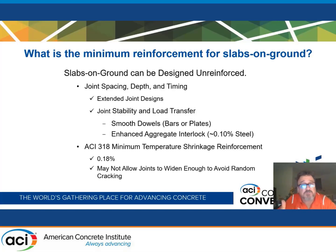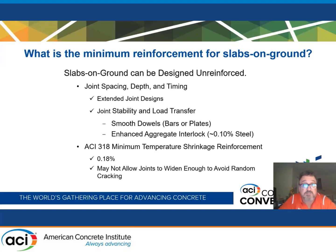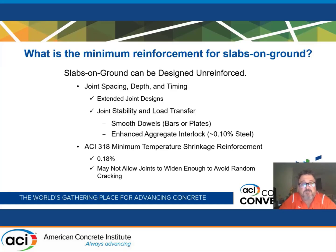Extended joint designs are possible, but you need to focus on three things: decreasing the concrete shrinkage potential, decreasing the restraint to that shrinkage potential, and including something for crack width control — because the risk is that you will get some intermediate out-of-joint random cracking. And the joint spacing recommendations in ACI 360 don't necessarily mean that your joints are going to function at that spacing.